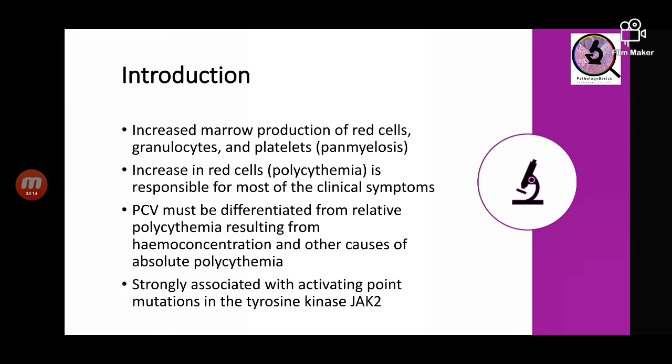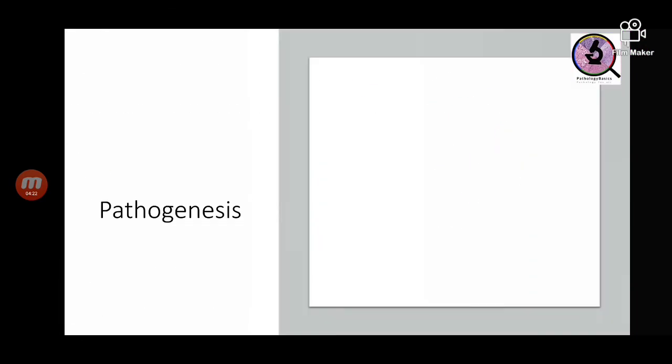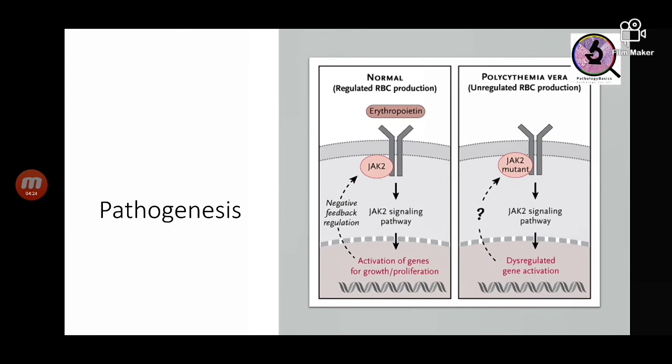The mutation most commonly associated with polycythemia vera is in tyrosine kinase JAK2. Normally there is a negative feedback mechanism when erythropoietin acts, leading to activation of genes for growth and proliferation of red cells. When JAK2 is mutant, this negative feedback regulation is lost, leading to unregulated RBC production — polycythemia vera.